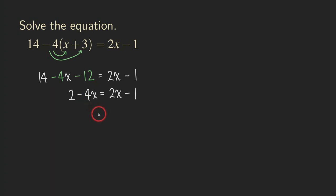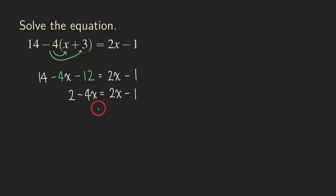Now what is the next step? The next step for solving a linear equation is that we are going to move all the terms with the x on one side and then move the terms without the x on the other side. So what we are going to do here is that we want to move this 2x to the left side. That can be done by subtracting 2x from both sides.